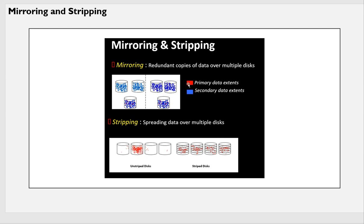You can see the red and blue colors here — red is primary copy and blue is secondary copy — that kind of mirroring. In case you lose one disk, you'll have a mirrored copy available. Striping is distributing and splitting your data into stripes and writing across all your disks.